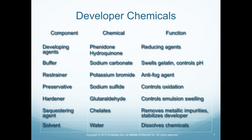So we have the developer chemicals. Luckily, they are not requiring that you know the chemical name, but you need to know what the component does. For example, developing agents are reducing agents. We go down to a preservative — what does the preservative do? It controls oxidation.